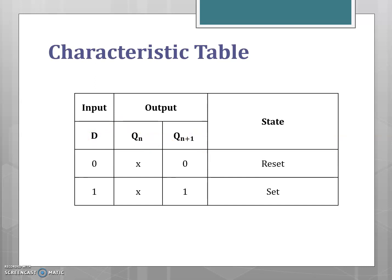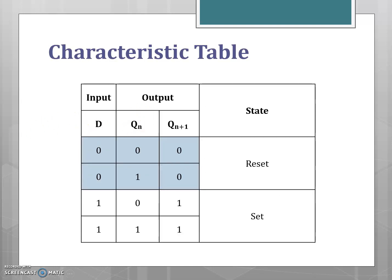This property makes the D latch useful in shift registers, because in a D flip-flop or D latch the output follows the input when the clock is active. Expanding the characteristic table with present state values gives four combinations. For input D=0, the next state Qn+1 is 0, representing reset condition. For D=1, the next state Qn+1 equals 1, representing the set condition.